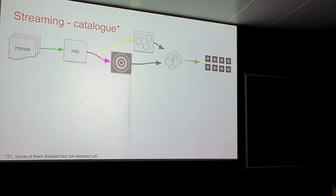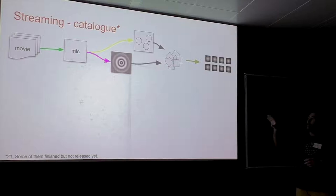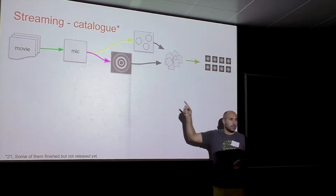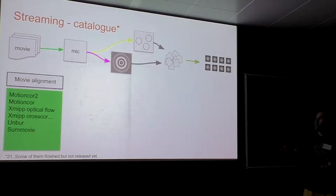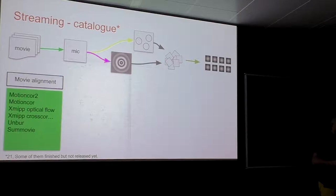What can you do in the facility? Some of what is currently released covers up to particle extraction. The next release — probably early next year — will extend this further. For movie alignment, available methods include MotionCor2, the old MotionCor, XMIPP optical flow, XMIPP cross-correlation, and eLURE, among others. Whatever comes next year about movie alignment will also be integrated — for example, Jose Miguel is working on integrating Relion 2, and we expect to have movie alignment from Relion 3 as well.